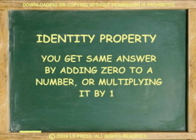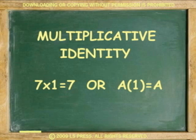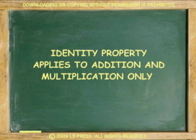So, in the additive identity, 3 plus 0 equals 3. Or, a plus 0 equals a. And in the multiplicative identity, 7 times 1 equals 7. Or, a times 1 equals a. Remember, the identity property only takes place with addition and multiplication.